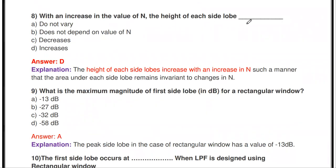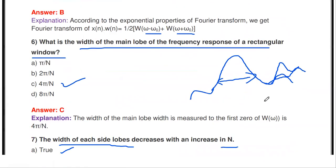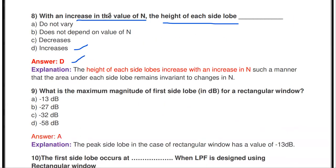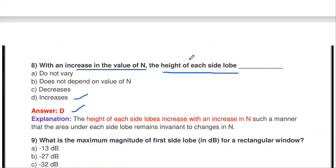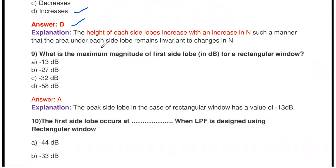The next question: with an increase in the value of N, the height of each side lobe is — what? The height of each side lobe increases with increasing N. For example, comparing the frequency response at N = 5 versus N = 11, the side lobe amplitude height is higher at N = 11. So with an increase in N, the height of each side lobe increases while the width of the side lobe decreases.